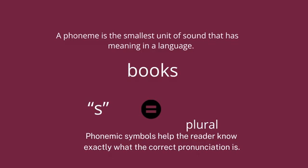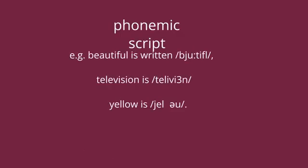Phonemic symbols help the reader know exactly what the correct pronunciation is. A phonemic script is a set of phonemic symbols which show, in writing, how words are pronounced. For example, 'beautiful' is written /ˈbjuːtɪfʊl/, 'television' is /ˈtelɪvɪʒən/, and 'yellow' is /ˈjeləʊ/.